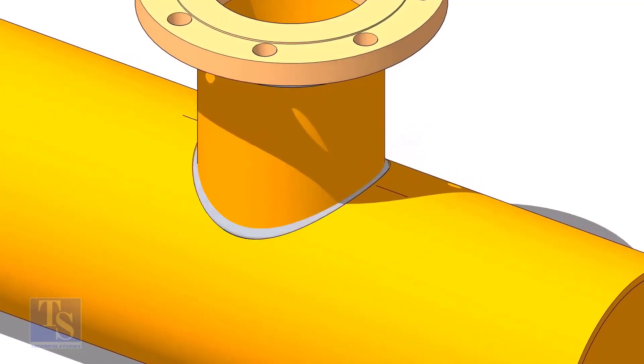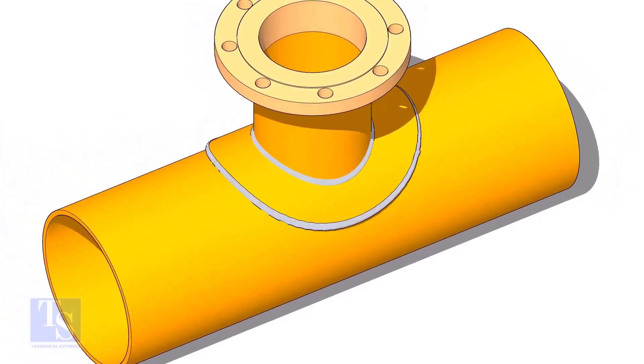A reinforcement pad or RF pad is used to strengthen the fabricated or welded pipe branch connection joints.